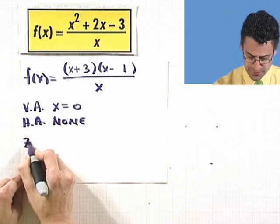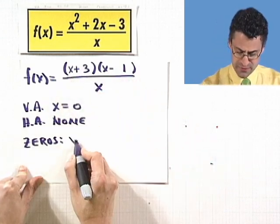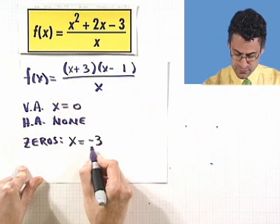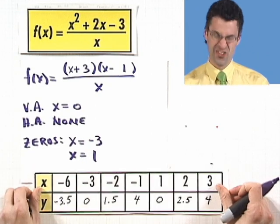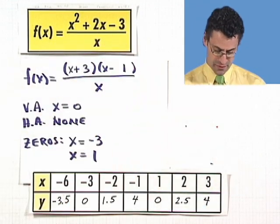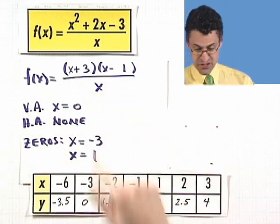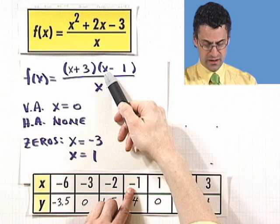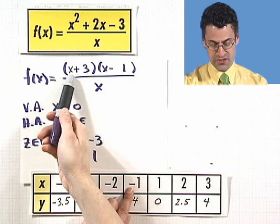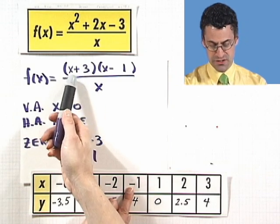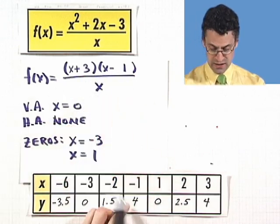Let's find the zeros, where it crosses the x-axis. That's where the numerator is 0, so either x equals negative 3 or x equals 1. We can make a table of points. For example, if you take negative 1 and plug it in, negative 1 plus 3 is 2, so 2 times negative 2 is negative 4. Negative 4 divided by negative 1 gives you 4.